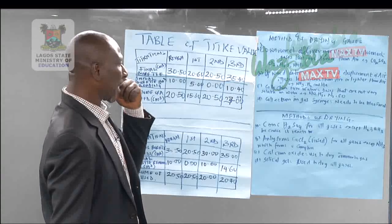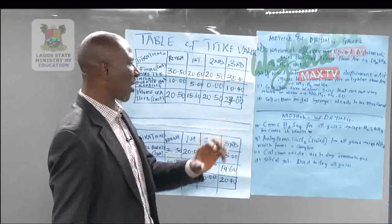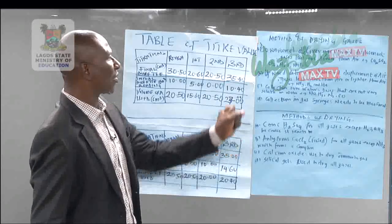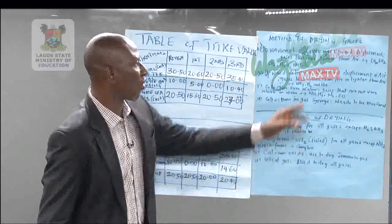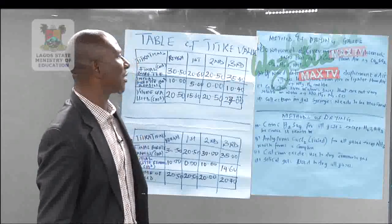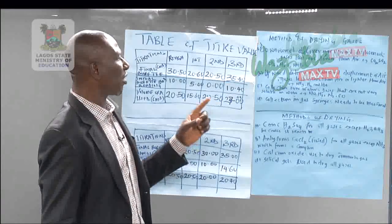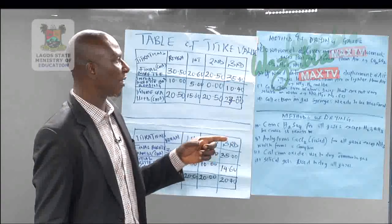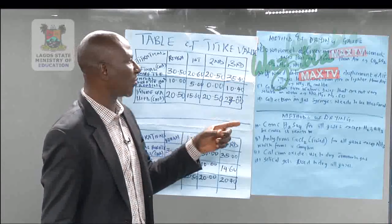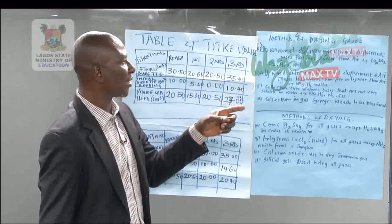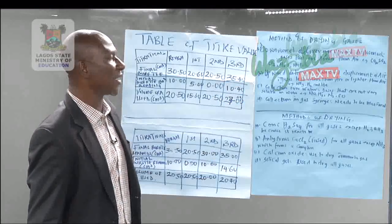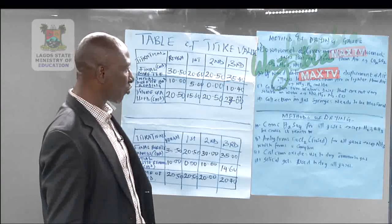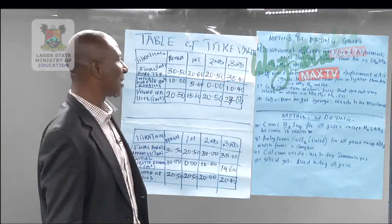Now we look not only at drying but at collection. Let us look at downward delivery, or what you call upward displacement. What we mean by upward displacement is for gases that are denser than air — for example, carbon dioxide, sulfur dioxide, chlorine gas, H2O gas, and HCl. You can use that method to collect those gases in the laboratory.